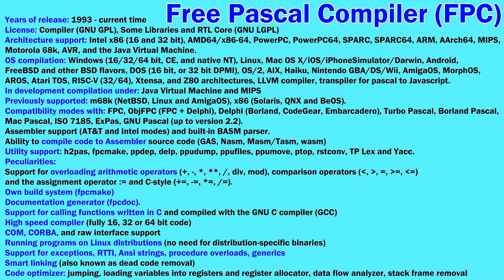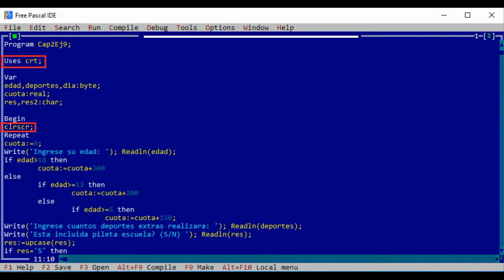The system requirements of the compiler are very low, and support for operating systems and platforms is extensive, so you can work with it on many systems, even on very weak computers. Free Pascal compiler has its own console shell programming environment, Free Pascal IDE, which looks like the Borland Pascal and Turbo Pascal environments, but if you wish you can use other programming environments by connecting this compiler to them.